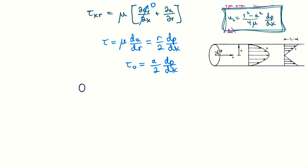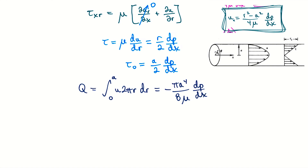The volume flow rate is obtained by integrating the velocity profile across the radius. Since u_x is not a function of theta we include the 2 pi r factor, giving us Q. The negative dp/dx ensures the result is positive since flow proceeds along a negative pressure gradient. The average velocity is then Q divided by the perpendicular area pi a squared, which simplifies to our average velocity expression.